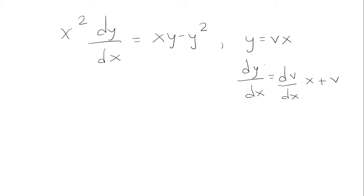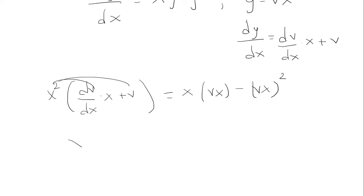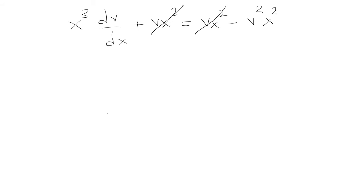So I'm going to plug in y and dy over dx into my differential equation. And now I'm going to simplify. So I'm going to distribute the x squared. So I have x cubed dv over dx plus vx squared equals vx squared minus v squared times x squared. The vx squareds are going to cancel. So I'm left with x cubed dv over dx equals negative v squared times x squared.